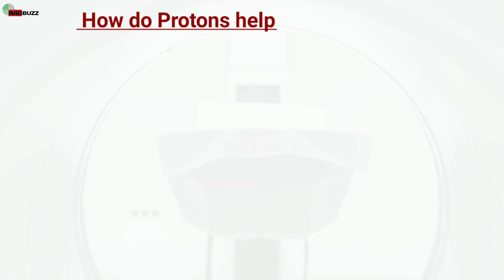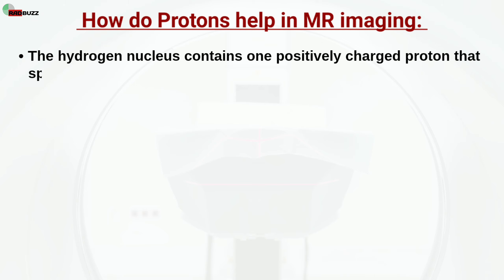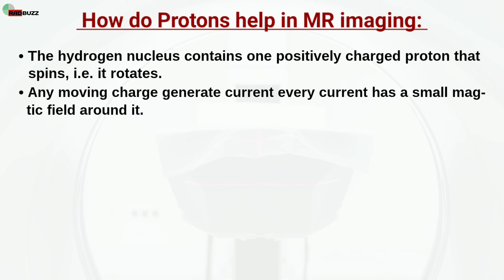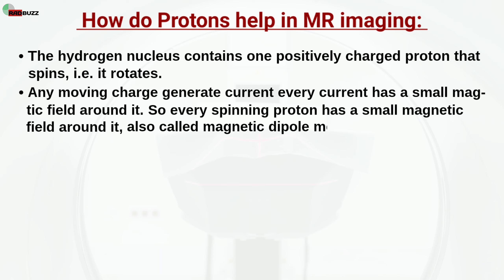How do protons help in MR imaging? The hydrogen nucleus contains one positively charged proton that spins — that is, it rotates. Any moving charge generates current, and every current has a small magnetic field around it. So every spinning proton has a small magnetic field around it, also called magnetic dipole moment.